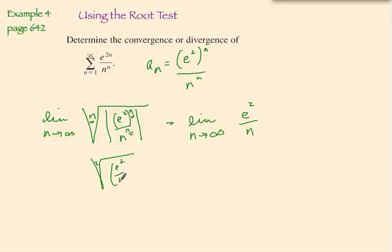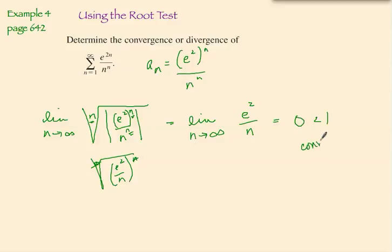When we plug in infinity, we get e-squared over infinity, which is zero. Since zero is less than 1, the root test tells us that this series converges. We have now studied 10 tests for determining the convergence or divergence of an infinite series. Skill in choosing and applying the various tests will come only with practice, and below is a set of guidelines for choosing an appropriate test.